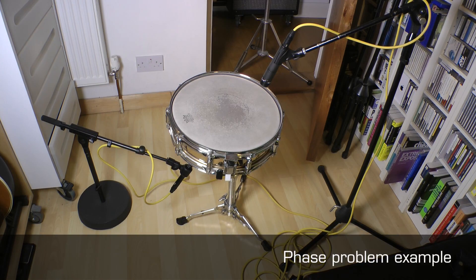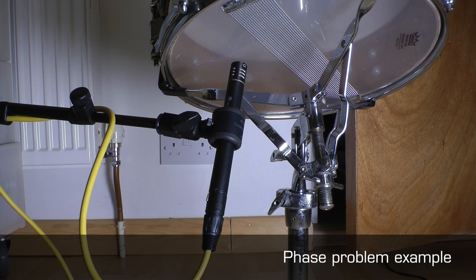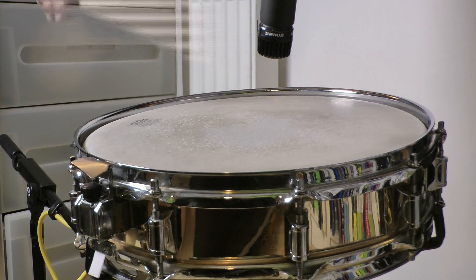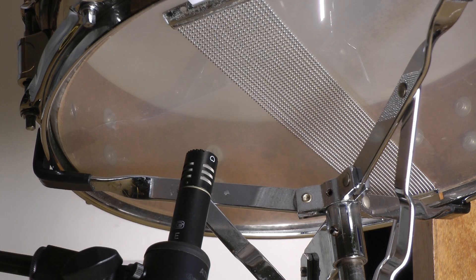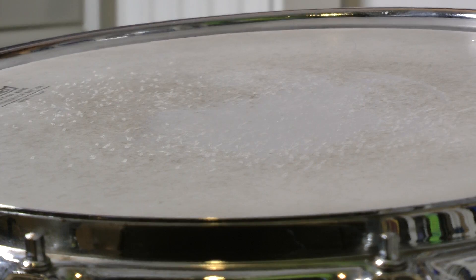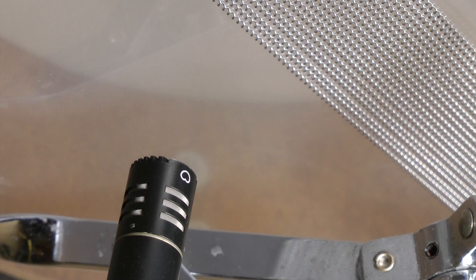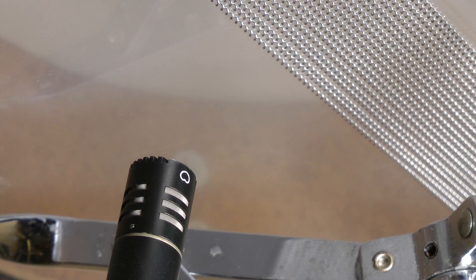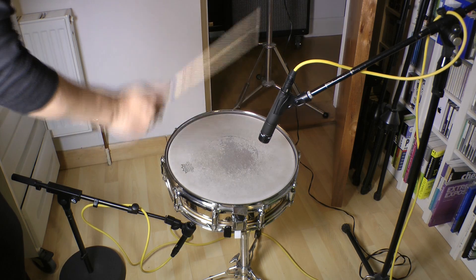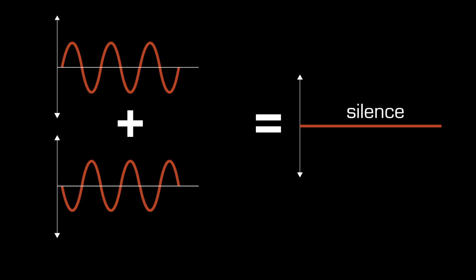Consider a snare drum that is being close mic'd from the top and underneath. Each mic hears a different tonal aspect of the overall timbre. When the drum is hit, the air pressure on top will drop as the skin moves away from the mic. But underneath, the pressure increases as the skin moves towards the mic. Therefore, the signals produced by the mics will be 180 degrees out of phase with each other, and when mixed together, cancelling of common harmonics will occur.